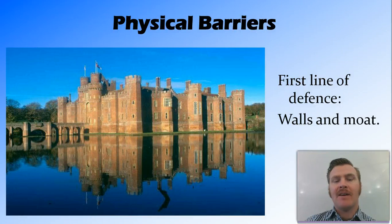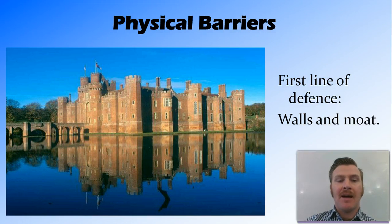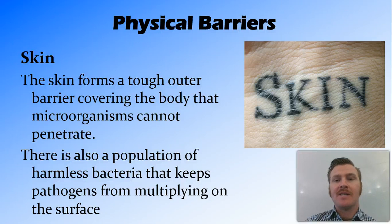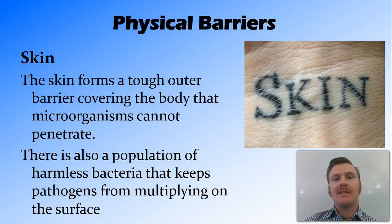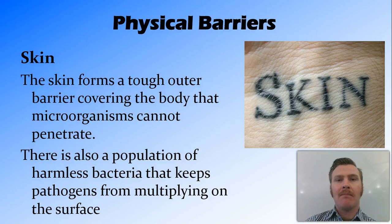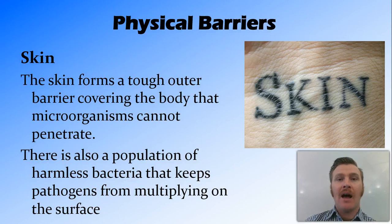When looking at our lines of defense, we use the analogy of a castle. The first line of defense, the physical barriers, in our castle we think of the walls and the moat — physical barriers designed to keep attacking things out, in this case pathogens. The skin is a tough outer layer around all parts of our body. Microorganisms cannot get through the skin easily, and there's also a population of microorganisms that live symbiotically with us, preventing other microorganisms from multiplying on the surface.